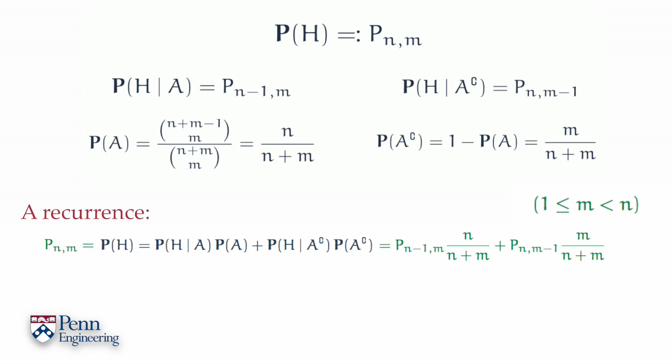Now, you may have experience with recurrence arguments in inductive arguments. Recurrences arise, for example, in things like binomial coefficients and a variety of other settings. A familiar, important one is that of the Fibonacci sequence. But in general, to solve a recurrence of this nature, one needs boundary conditions. And so, what happens at boundary values for n and m? And these are easy to intuit.